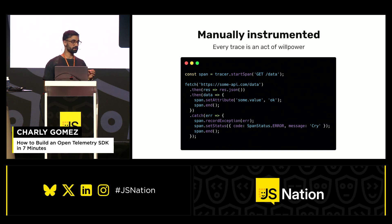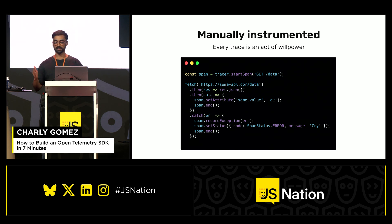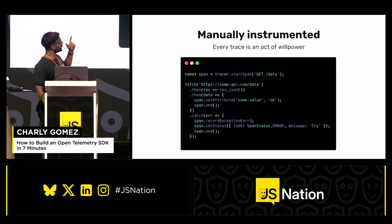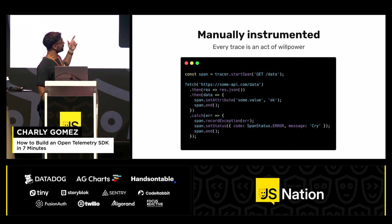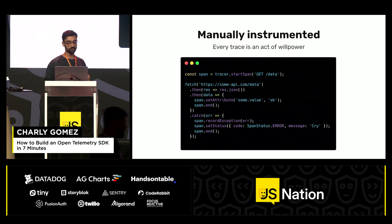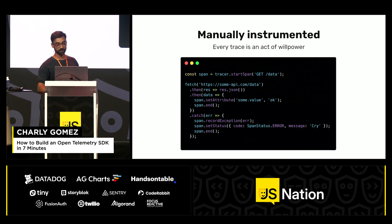A span is just a word for a single operation that is timed and that measures things. So here we start the span, we call fetch, and whenever the fetch call ends, we end the span — and that's how we measure it. You see, there's quite a lot of code to maintain.